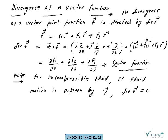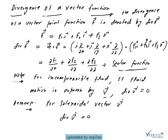Divergence is very important for any incompressible fluid. If we express the fluid motion by the vector v, then the divergence of v is 0. For a solenoidal vector v, we must have divergence of v equal to 0.